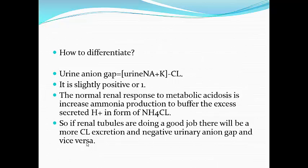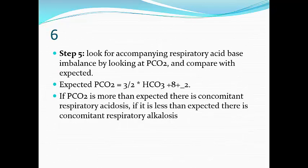If the tubule is doing a good job, there will be more chloride excretion and a negative urine anion gap. So if diarrhea is the cause of normal anion gap metabolic acidosis, the urine anion gap will be negative because the tubule is normal. But if the problem is the tubule itself — as in renal tubular acidosis — the urine anion gap will be highly positive. If normal anion gap: take history, check urine pH (above 5.3 suggests RTA), then check urine anion gap — negative means diarrhea, positive means RTA.